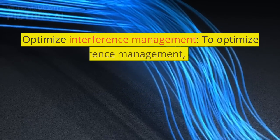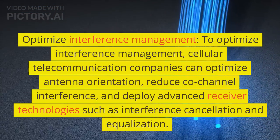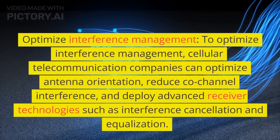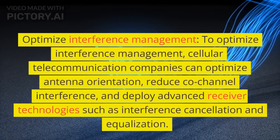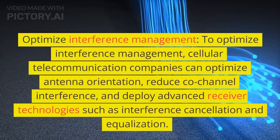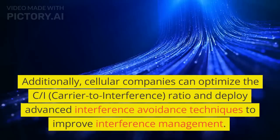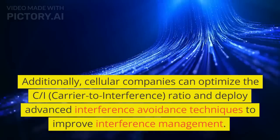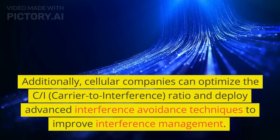Optimize Interference Management: To optimize interference management, cellular telecommunication companies can optimize antenna orientation, reduce co-channel interference, and deploy advanced receiver technologies such as interference cancellation and equalization. Additionally, cellular companies can optimize the CI, carrier-to-interference, ratio and deploy advanced interference avoidance techniques to improve interference management.